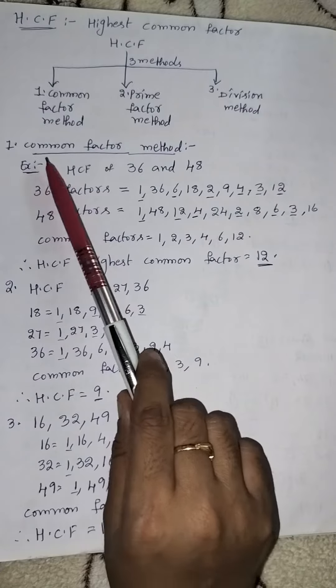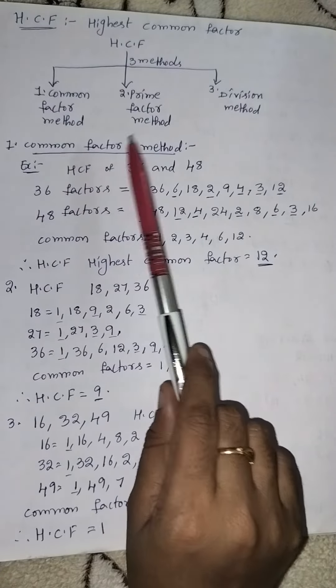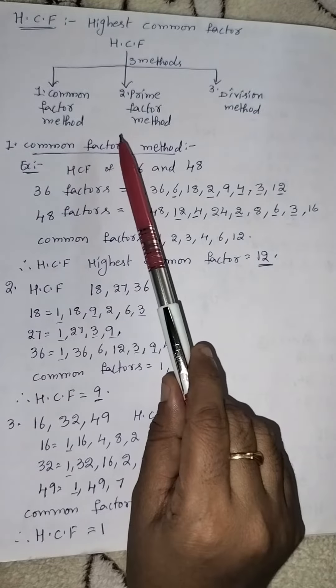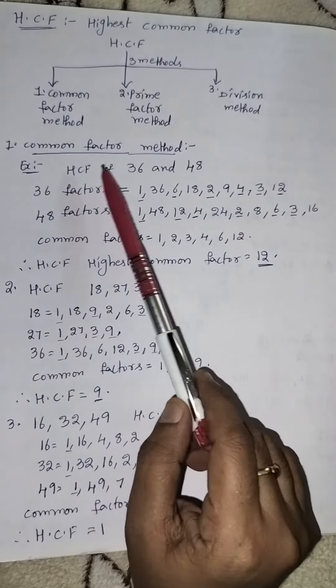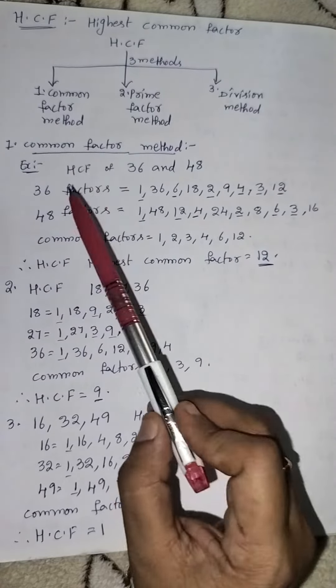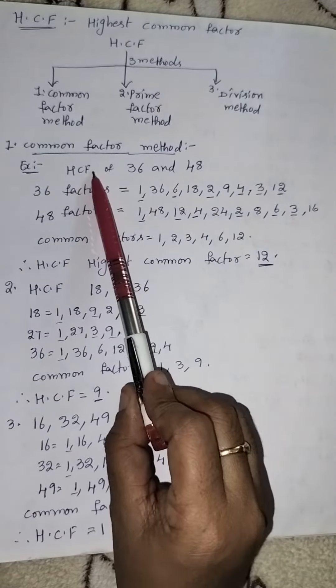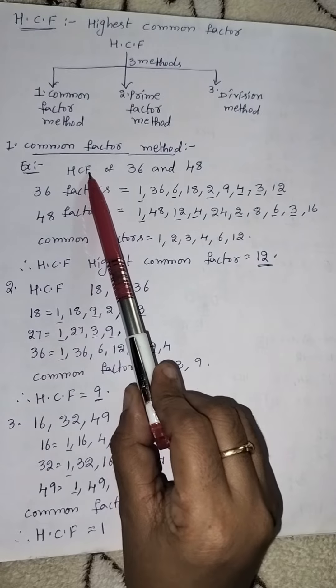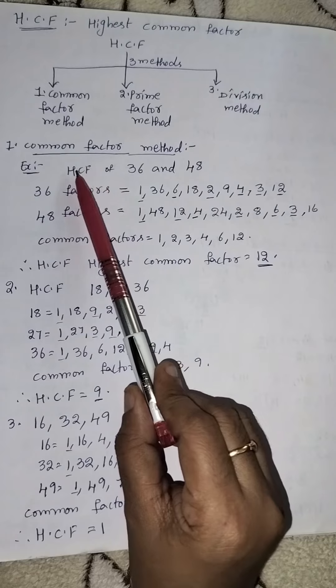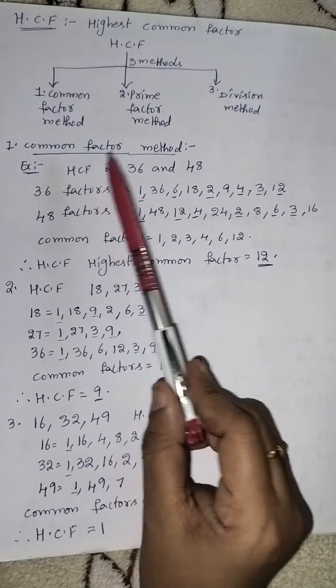First of all in this class we will learn about common factor method. This is the very easy method. For example HCF of 36 and 48. In this first we find the factors, after then we find the common factor, and after then we find the highest common factor.